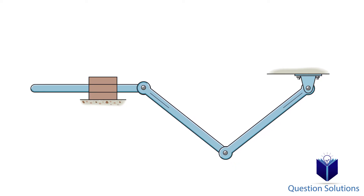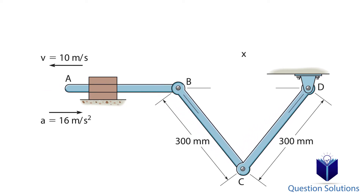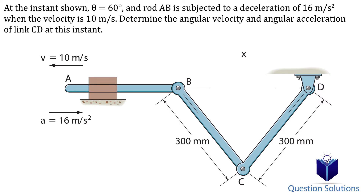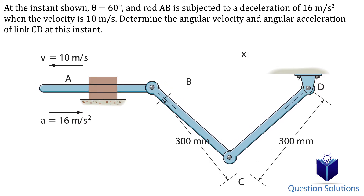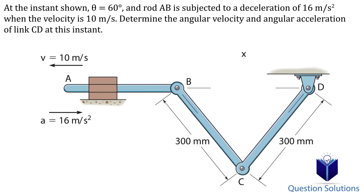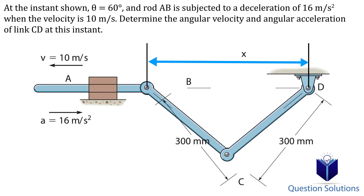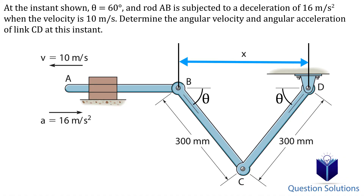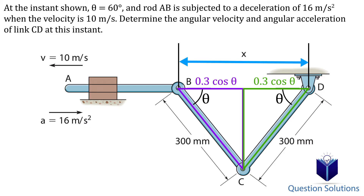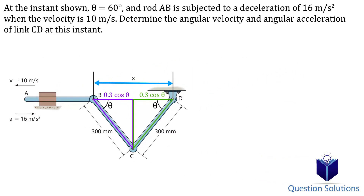Let's take a look at this example where we need to figure out the angular velocity and angular acceleration of link CD. Link AB moves back and forth when the other two links move in their own respective paths, so the goal is to relate the movement of link AB to that of link CD. From the fixed point at D, the horizontal distance to point B changes depending on the position of the links, so we use that distance and relate it with the angle that links CD and CB make. We can draw two right-angled triangles, so the base of each triangle is 0.3 cos θ, and the total distance is two times that. Now we can take the derivative.